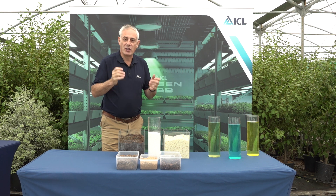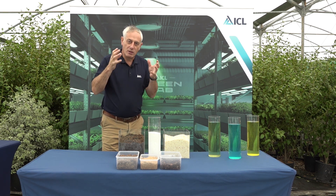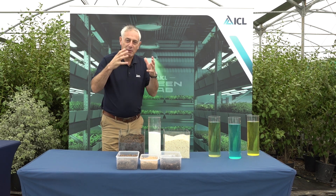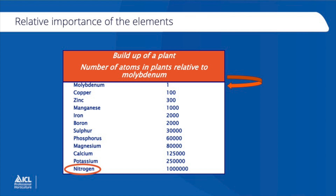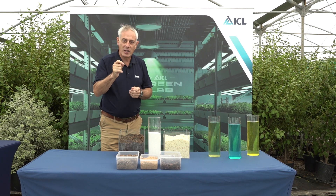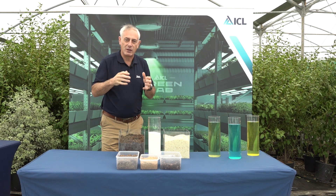To see how important nitrogen is to the plant, if we break the plant down into its component nutrients, we can see how many parts of each element there are. If we look at a trace element like molybdenum, for every one part of molybdenum there's a million parts of nitrogen. That really shows how much nitrogen is within a plant, within all the organic molecules. But equally, if the molybdenum is missing, it causes quality effects on the plant — so we have to get everything in balance.